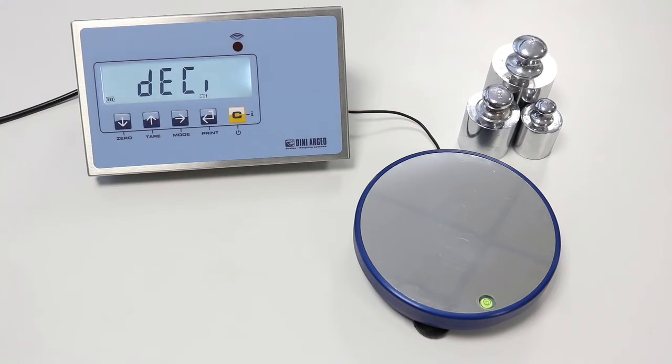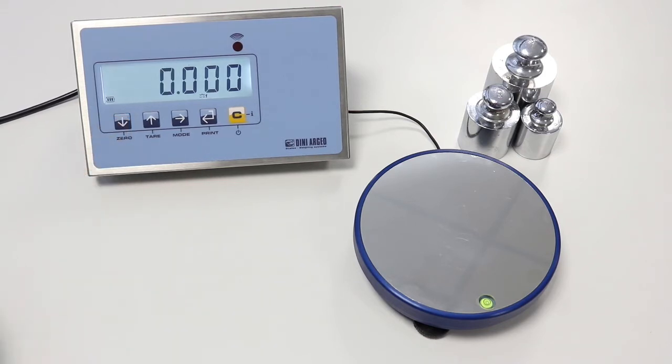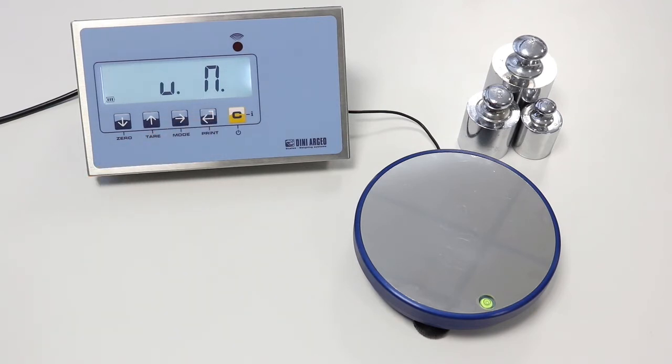DESI is the decimal point. We enter with PRINT key and we change the position using the 0 key. Our example needs one decimal place. We confirm this setting by pressing PRINT. The indicator passes automatically to the next step.